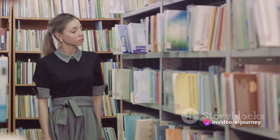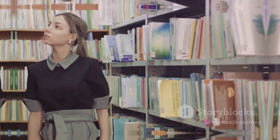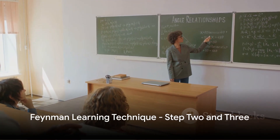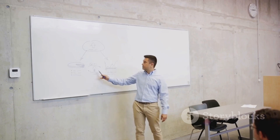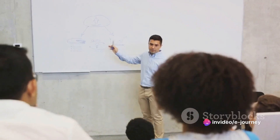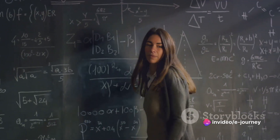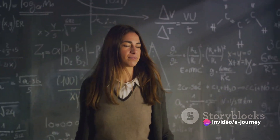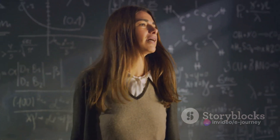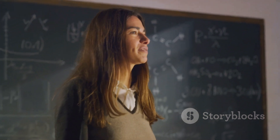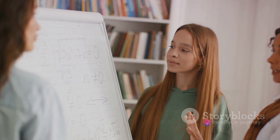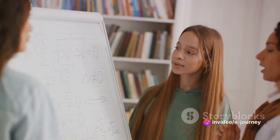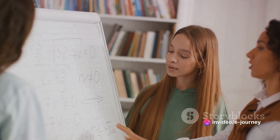Once you've got a good grip on the concept, we move on to step two. Step two of the Feynman Learning Technique is all about teaching. Can you explain this concept in simple terms, as if you were teaching it to a child? This step is a crucial part of the learning process. It's not just about regurgitating information — it's about breaking down complex concepts into simple, digestible pieces. The ability to explain something simply is a true measure of understanding. If you can't explain it simply, then you don't understand it well enough.